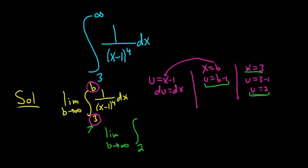And instead of b, when x is b, u is b minus 1. So we have b minus 1. And this is going to be 1 over, and we said x minus 1 was u. So this is u to the 4th du.